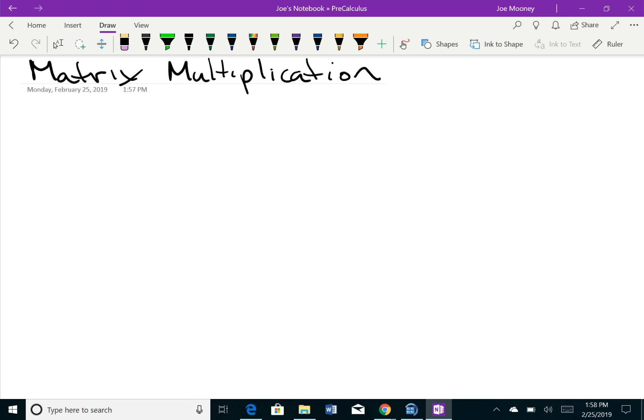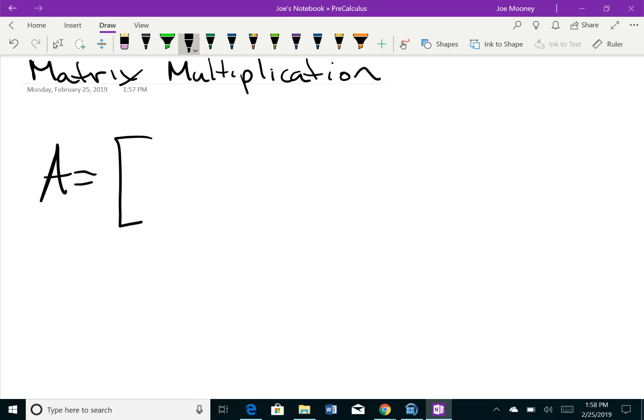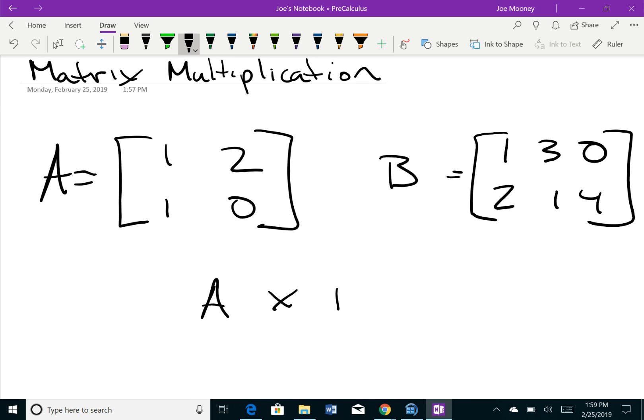For our dimensions of our matrices, let me give you one. Matrix A: [1 2; 1 0]. Matrix B: [1 3 0; 2 1 4]. I'm going to ask you to multiply matrix A times matrix B. You will see if that's possible, and once you see how multiplication is done, you'll understand this a little bit more.